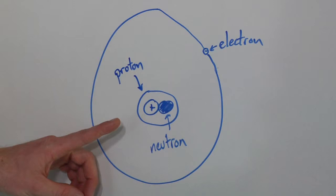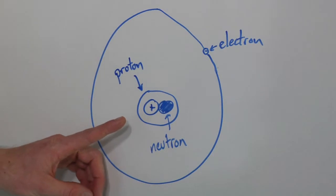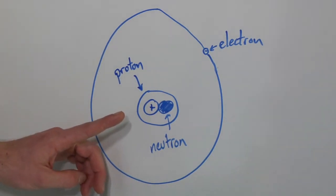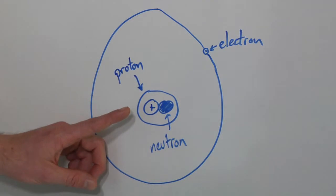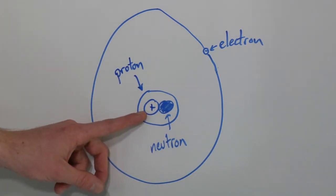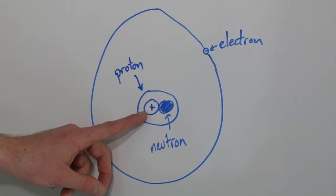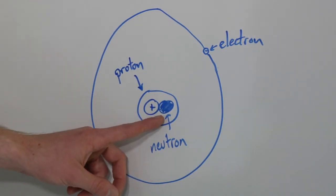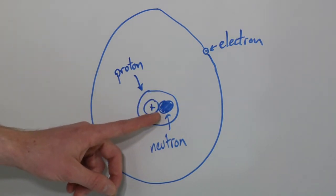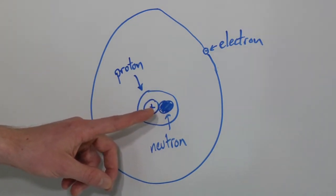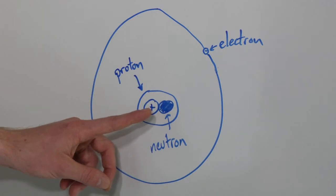So in your atom — this is a very generic drawing of an atom, it's hard to see atoms — you have a proton, which is a positively charged particle, and you have a neutron, which is a neutrally charged particle. These are associated with each other, and they're inside of a sort of center location called a nucleus.